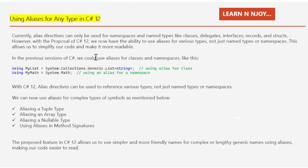In previous versions of C#, we would use aliases for classes and namespaces like this: 'using MyList = System.Collections.Generic.List<string>' — here I have used an alias for a class. And 'using MyMath = System.Math' — here I have used an alias for a namespace. This makes it easier for us to refer to these types in our code.